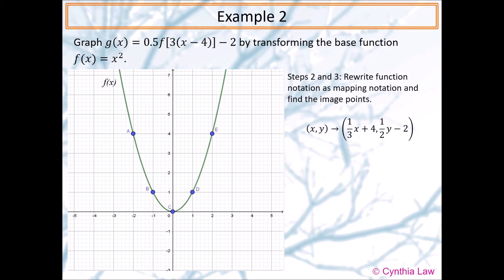Writing them as mapping notation we have (1/3 x + 4, 1/2 y - 2). Then we transform each point according to the mapping notation. So A' is now 10/3 and 0, B' is 11/3 and -3/2, C' is 4 and -2, D' is 13/3 and -3/2, E' is 14/3 and 0.